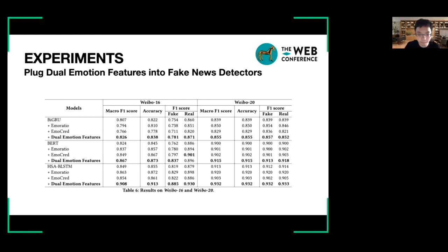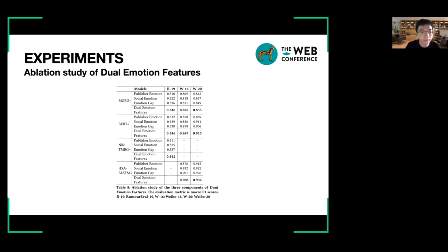We explore how effective the three components of dual emotion features are. We further conduct ablation experiments. We can see that, among all the datasets, adding dual emotion features into the fake news detectors all obtain the highest macro F1 score. Besides, compared with original fake news detectors, using any components of dual emotion features enhances the performances of them. During the three components, social emotion and emotion gap matter more when detecting fake news.